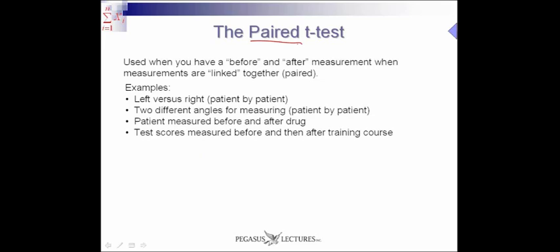A specific t-test is called the paired t-test. As the name suggests, paired implies the data points are paired — they're coupled. Use this when you have a before and after measurement, or when measurements are linked together, i.e., paired. For example, we could be comparing left versus right patient by patient. On patient A, we compare left versus right, then patient B, left versus right — checking a measurement on the same patient before and after, or left and right, at two different angles, patient by patient.